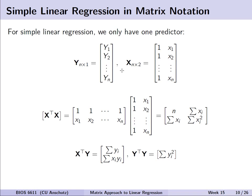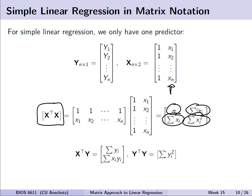Before extending to multiple linear regression, let's look at simple linear regression to verify previously derived properties. In simple linear regression we have one predictor, so the design matrix is an n by 2 matrix. Writing out X-transpose X, we can do the multiplication and see we end up with summary statistics: the sample size, sum of X, and sum of X squared across all observations.